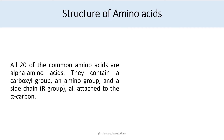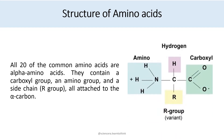Let's move on to the structure of amino acids. All 20 of the common amino acids are alpha amino acids. They contain a carboxyl group, an amino group, and a side chain R group, all attached to the alpha carbon. On the screen you can see: COO⁻ is the carboxyl group, NH3⁺ is the amino group carrying a positive charge, and the carboxyl group carries a negative charge. H is hydrogen, and R represents the R group — the variant side chain of the amino acid.